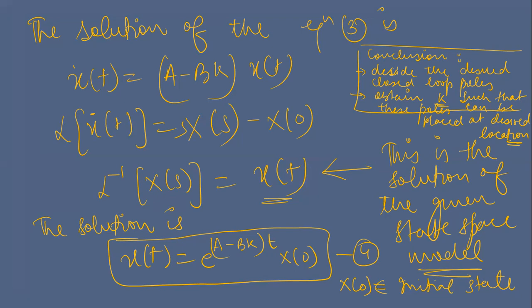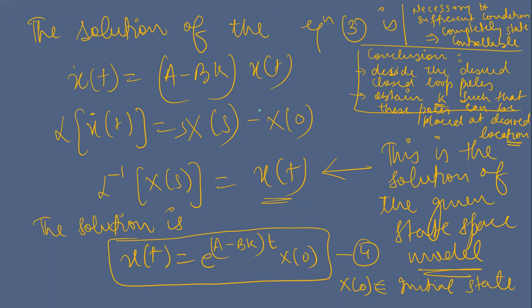There is a necessary and sufficient condition in pole placement technique, which we have already discussed: the original system must be completely state controllable. This is the necessary and sufficient condition. That was today's lecture. Thank you so much.